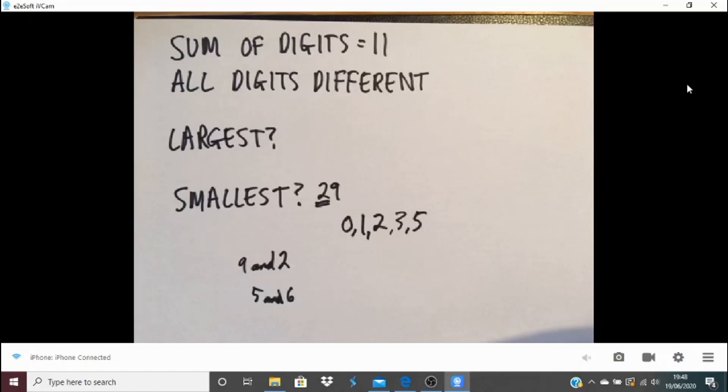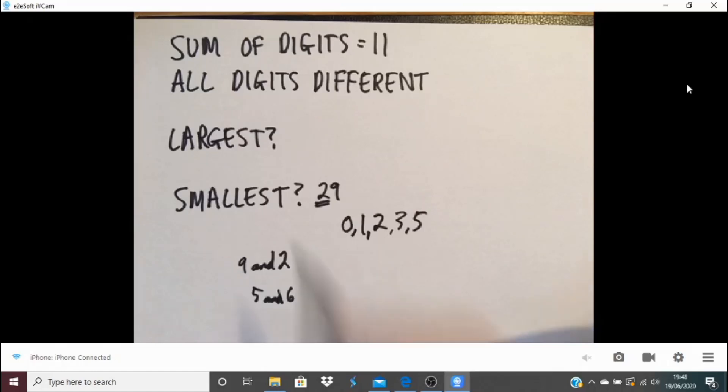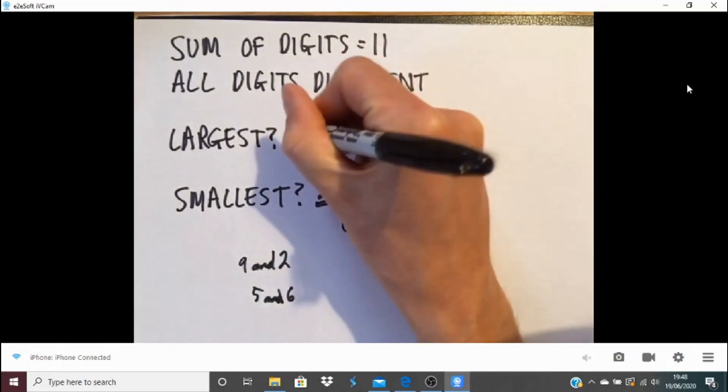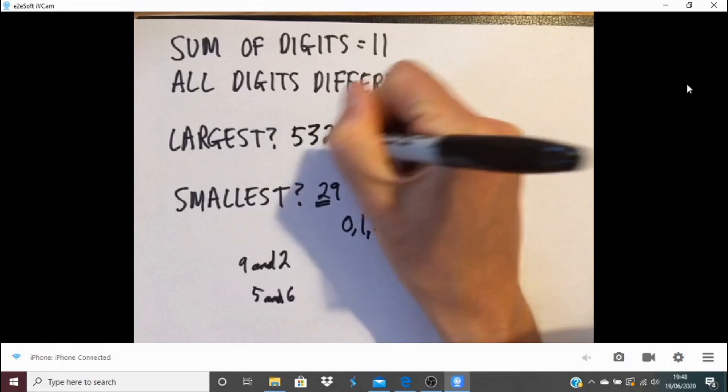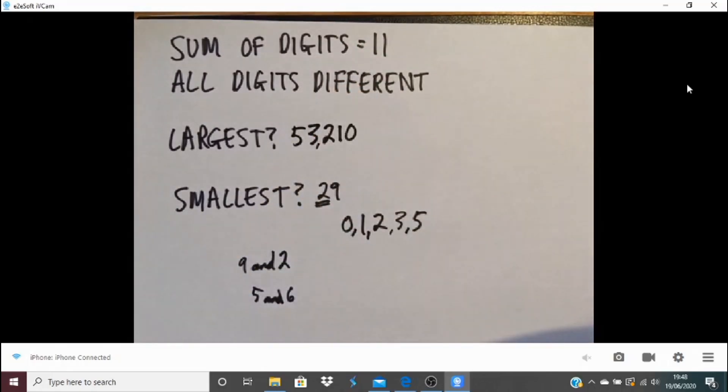So then I just need to think about how am I going to order those digits to make this number as large as possible. So, of course, what I'll go for is 5, 3, 2, 1, 0. So there we've got 53,210.